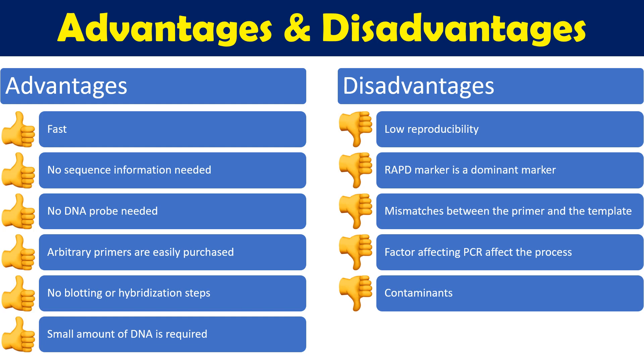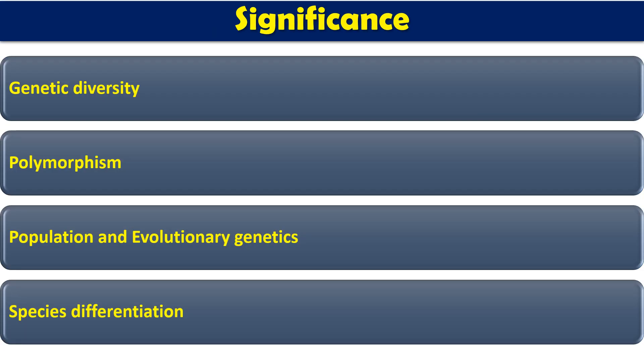The RAPD test is mainly used for the study of genetic diversity, polymorphic behavior of genes, population analysis, evolutionary studies, and some gene analysis such as herbicide effects, toxin effects, and species differentiation. These are the different uses of this RAPD test.